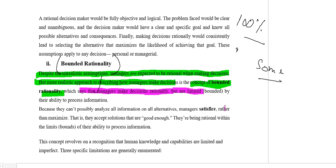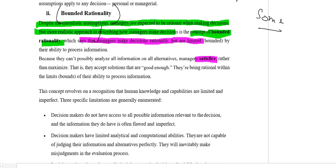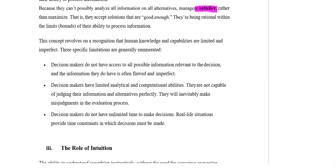Managers cannot cover everything in their environment — they just cover some things and fulfill what is called 'satisficing.' Satisficing means the manager evaluates alternatives and, if they satisfy his mental framework, he takes a decision. That decision can appear rational, but it cannot be 100% rational — it is basically bounded rational. There are three different limitations in bounded rationality.